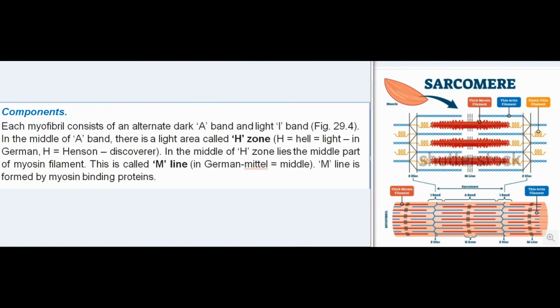Components: Each myofibril consists of an alternate dark A-band and light I-band. In the middle of A band, there is a light area called H-zone (H = hell = light in German; H = Hensen, discoverer). In the middle of H-zone lies the middle part of myosin filament. This is called M-line (in German mittel = middle). M-line is formed by myosin binding proteins.